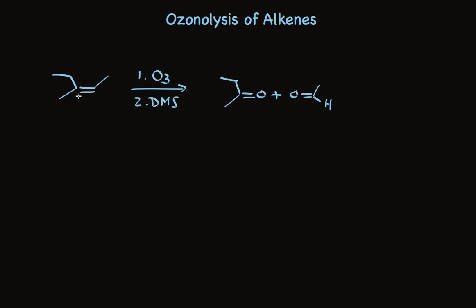When a carbon atom, such as the one on the left, has two carbons attached to it, the product will be a ketone. When the carbon only has one alkyl group attached to it, or none, the product will be an aldehyde. In this case, we make a ketone and an aldehyde.